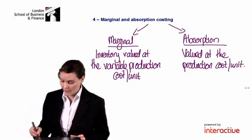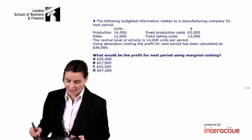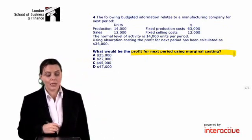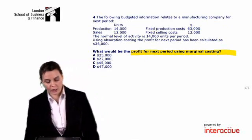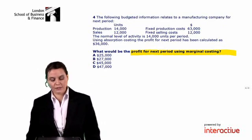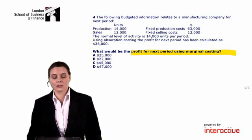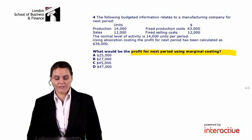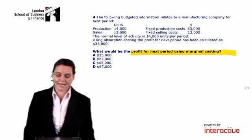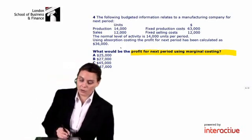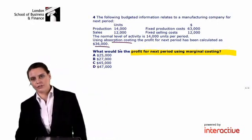Let's have a look at our first question. We're asked: what would be the profit for the next period using marginal costing? We've been told the following budgeted information relates to a manufacturing company for next period. We have our production and sales units, as well as our fixed production and fixed selling costs. The normal level of activity is 14,000 units per period. Using absorption costing, the profit for next period has been calculated as $36,000. So we're going to have to reconcile this absorption costing profit of $36,000 to our marginal costing profit.